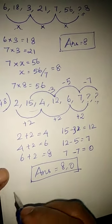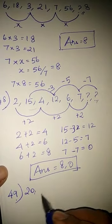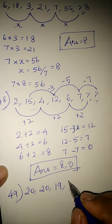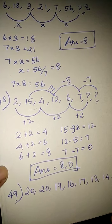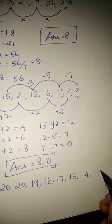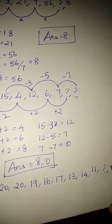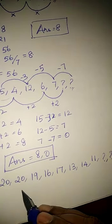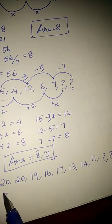Then we are moving to next sum, 49th sum. 20 comma 19 comma 16 comma 17 comma 13 comma 14 comma 11 comma question mark, question mark. Here also they asked 2 solutions. Here also we are going to use the same method. It must be a subtraction I think.